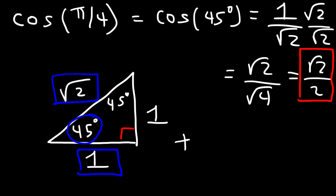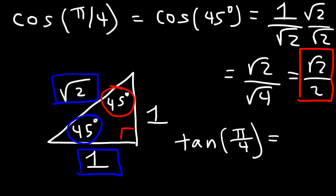Now let's calculate tangent of π/4, or 45°. Tangent = opposite/adjacent = 1/1 = 1. So tangent of π/4, or tangent of 45°, equals 1.